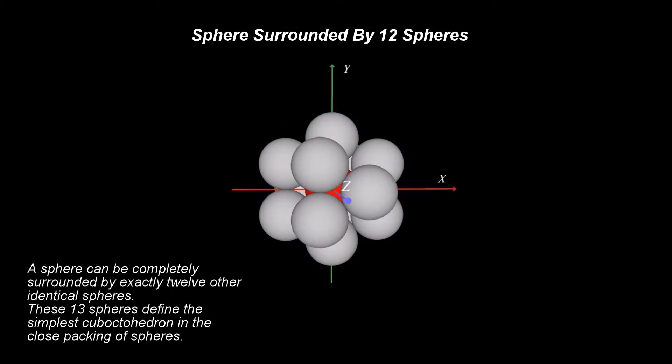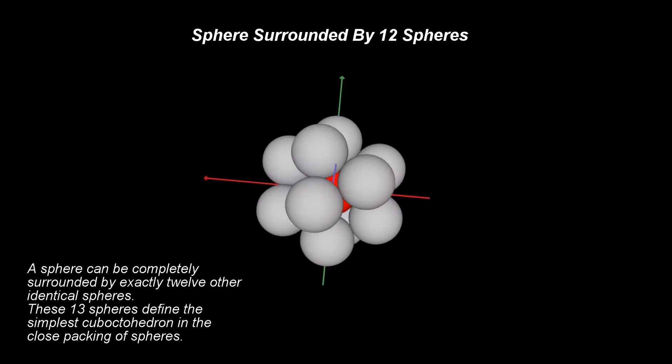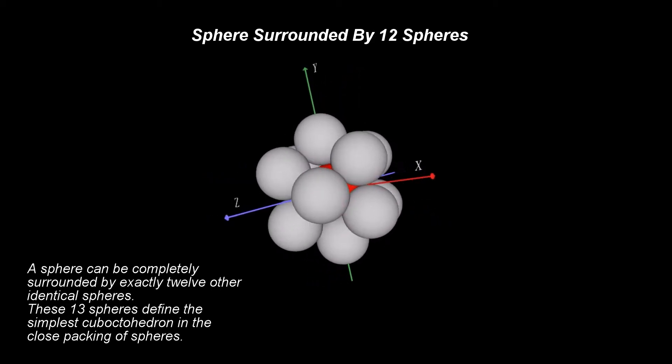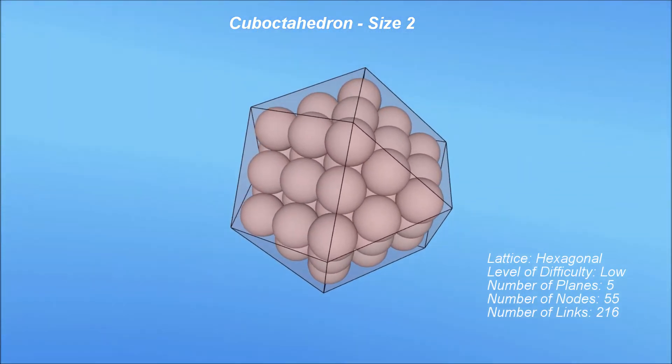As we have seen already, a sphere can be completely surrounded by exactly 12 identical spheres. These 13 spheres define the simplest cube octahedron in the close packing of spheres arrangement.